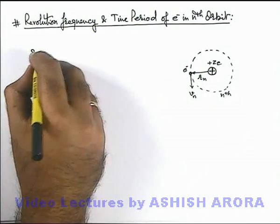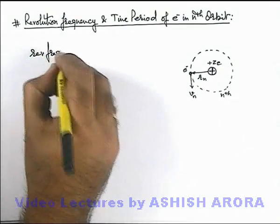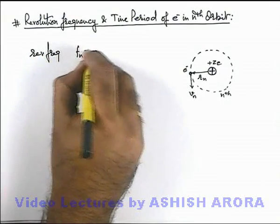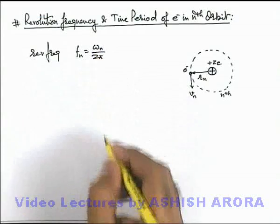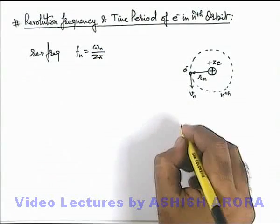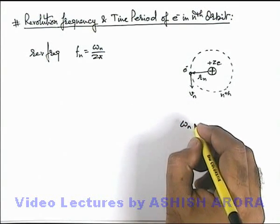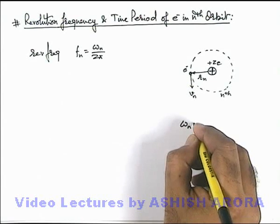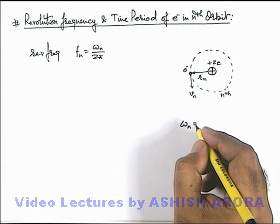Here we can directly write revolution frequency f_n as omega_n over 2π, and the value of omega_n we have already obtained, as we have seen the value of omega_n.